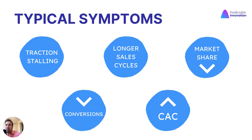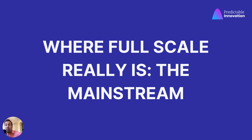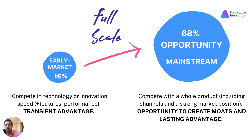What are the typical symptoms when we are trying to cross from early adopters to the early majority? We can experience a reduction in sales traction, longer sales cycles, reduced market share, increased customer acquisition cost, and reduced conversion. Where full scale really is, is the mainstream. Innovators plus early adopters are just about 16% of any given market, while the early majority and late majority account for 68% — that's where the full scale is.